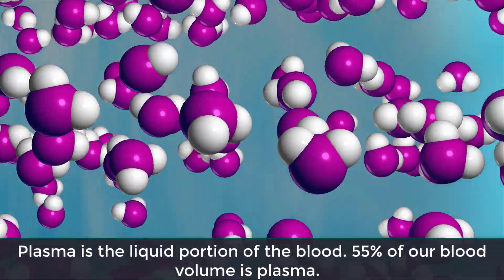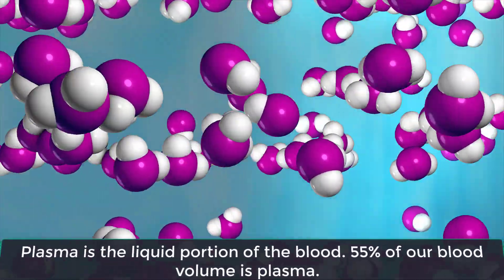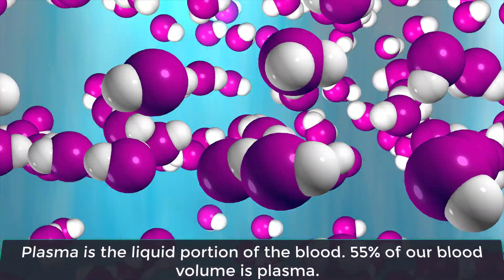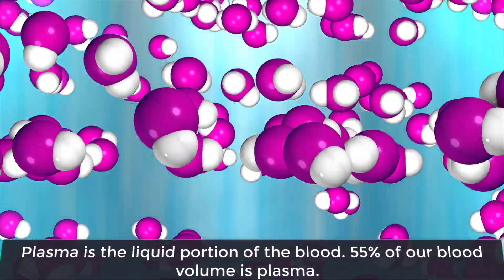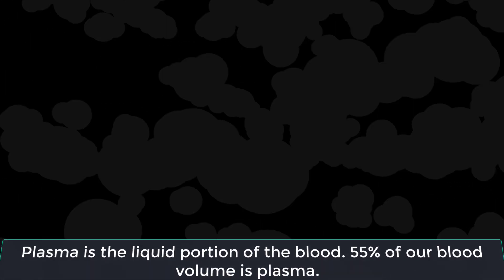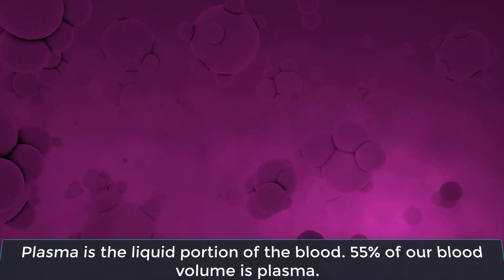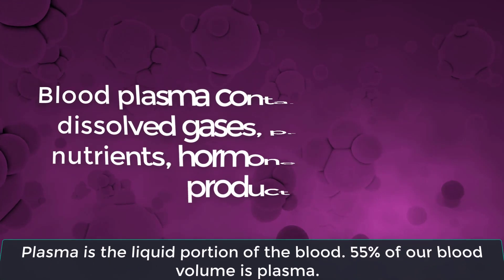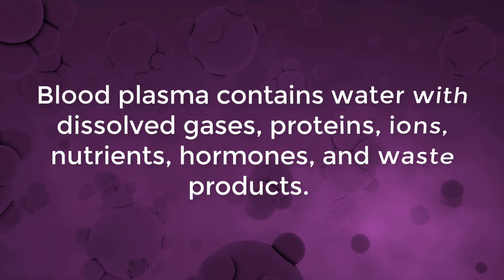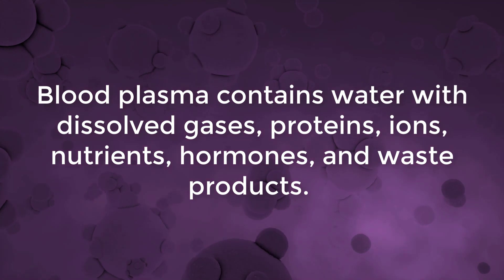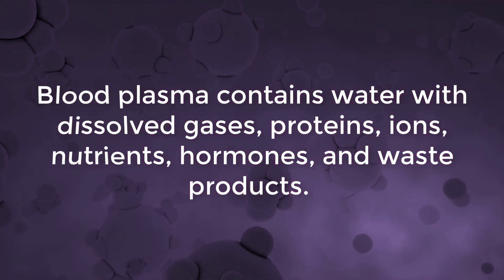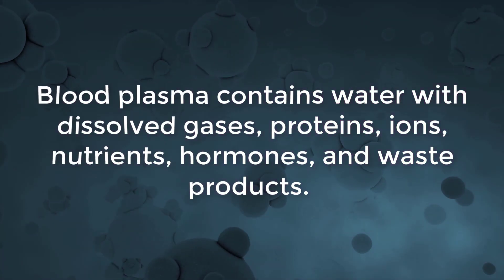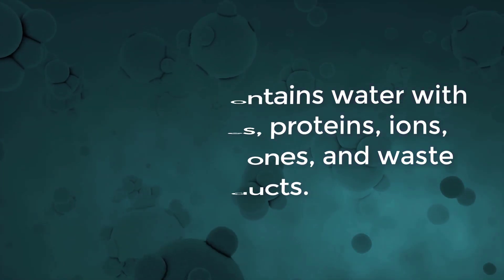Plasma is the liquid portion of the blood. More than half of our blood volume is plasma. Plasma contains water with dissolved gases, proteins, ions, nutrients, hormones, and waste products.